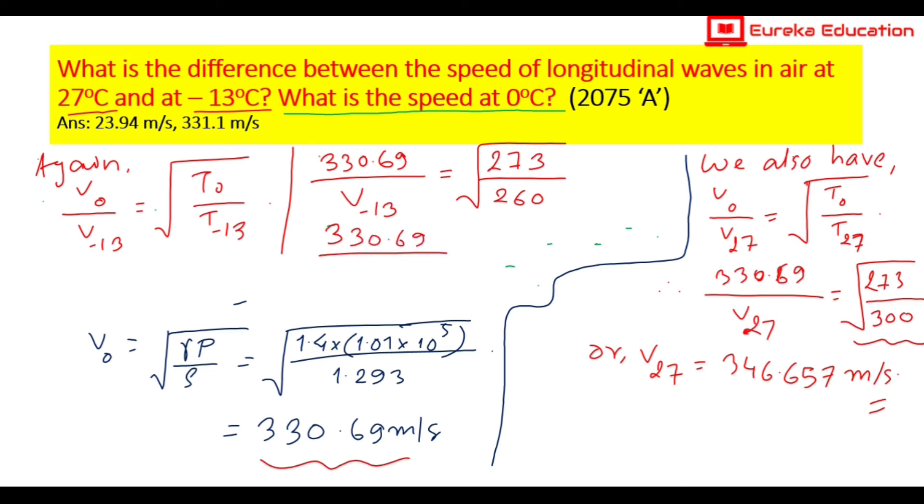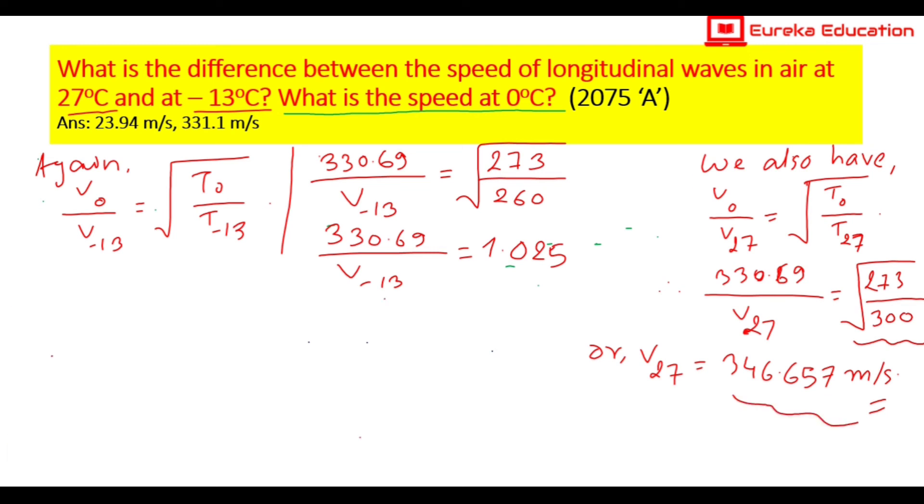330.69 divided by velocity at minus 13 equals root under 273 divided by 260, which gives 1.0246. Cross multiplying and dividing, the velocity at minus 13 degrees centigrade comes out to be 322.72 meters per second.